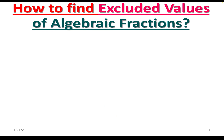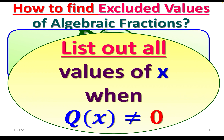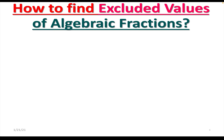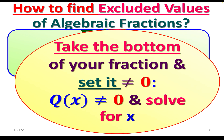How do we find excluded values of a given algebraic fraction? Say we have p(x) over q(x). All you need to do is list all values of x when q(x) is not equal to zero — q(x) is the denominator. Set the denominator not equal to zero and solve for x. The solution gives you the list of all excluded values. If you look at your algebraic fraction as a rational function in terms of x, finding excluded values is identical to finding the domain of that rational function.